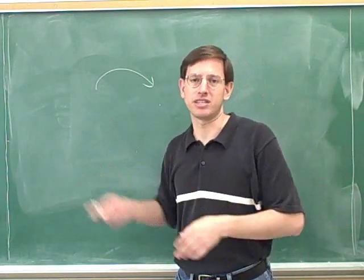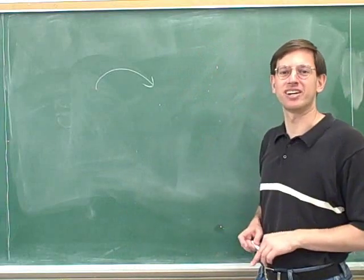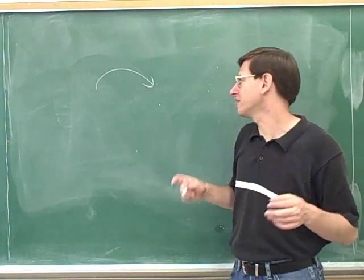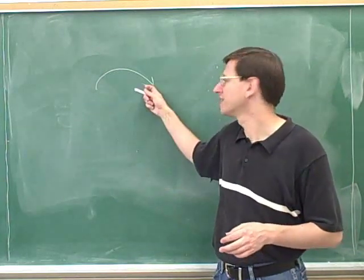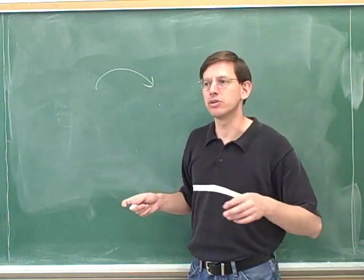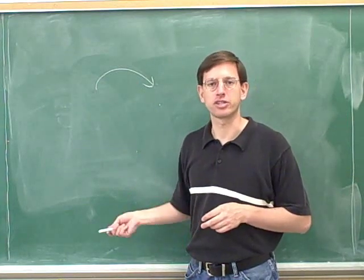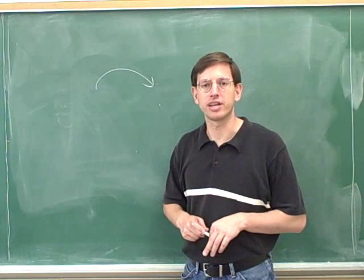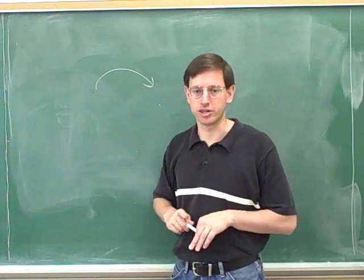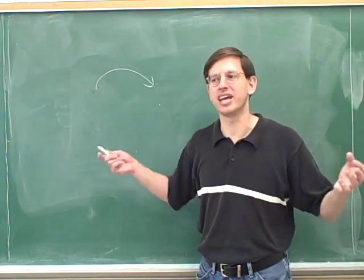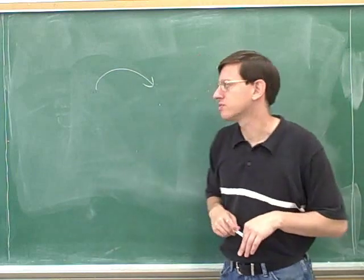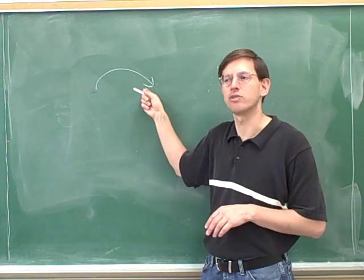Sometimes people get confused about which end is the head and which is the tail. The head is this end, and the tail is this end. The electron-pushing arrow tells you where the electrons are coming from and where they are going to. The tail of the arrow shows where the electrons are coming from, and the head shows where the electrons are going to. If you reversed them, you'd totally reverse the direction the electrons are moving.